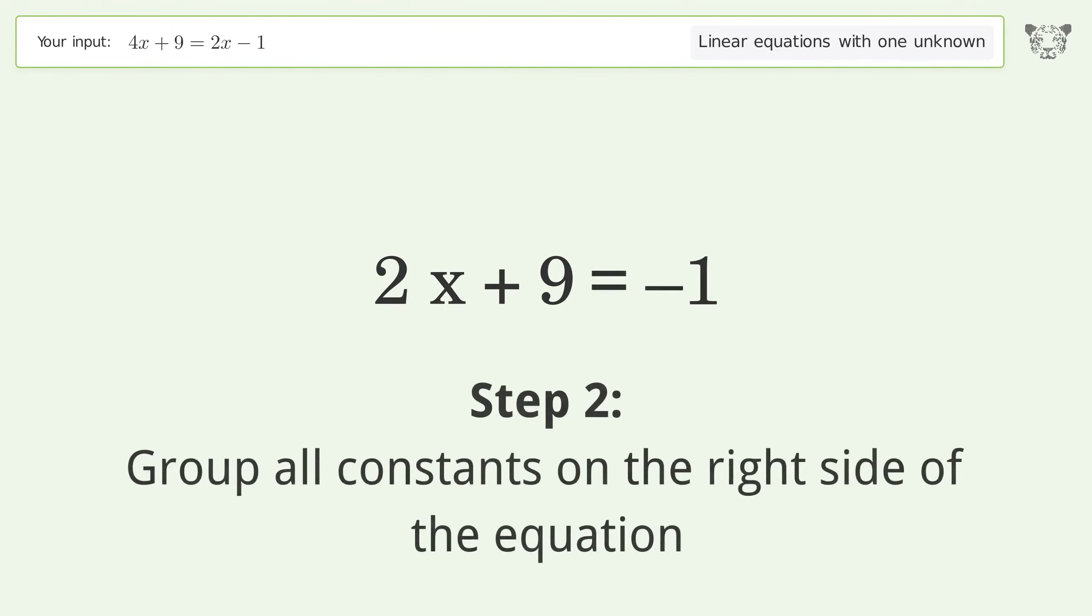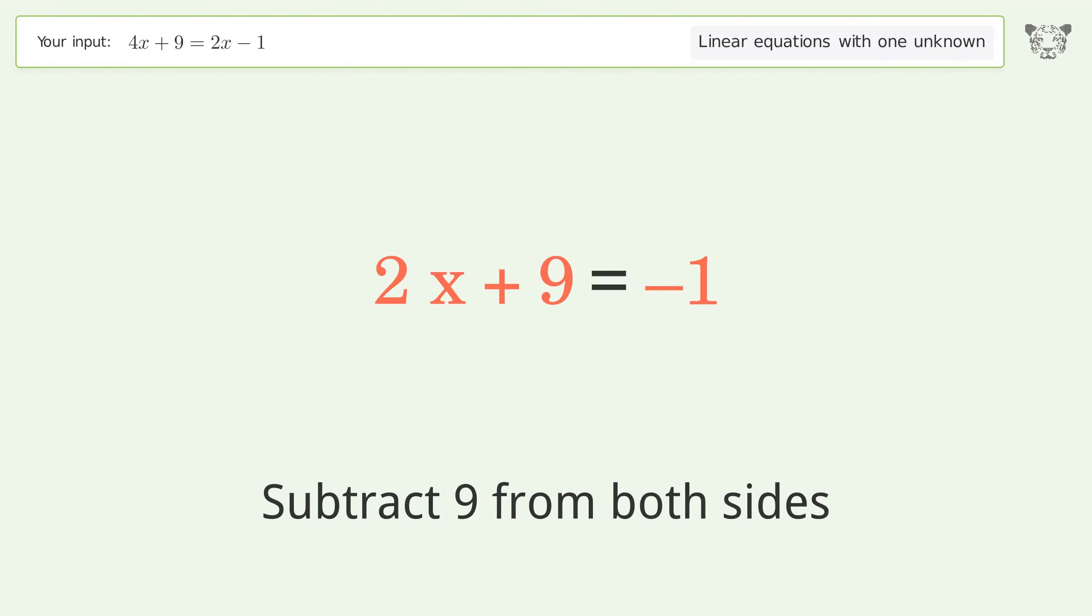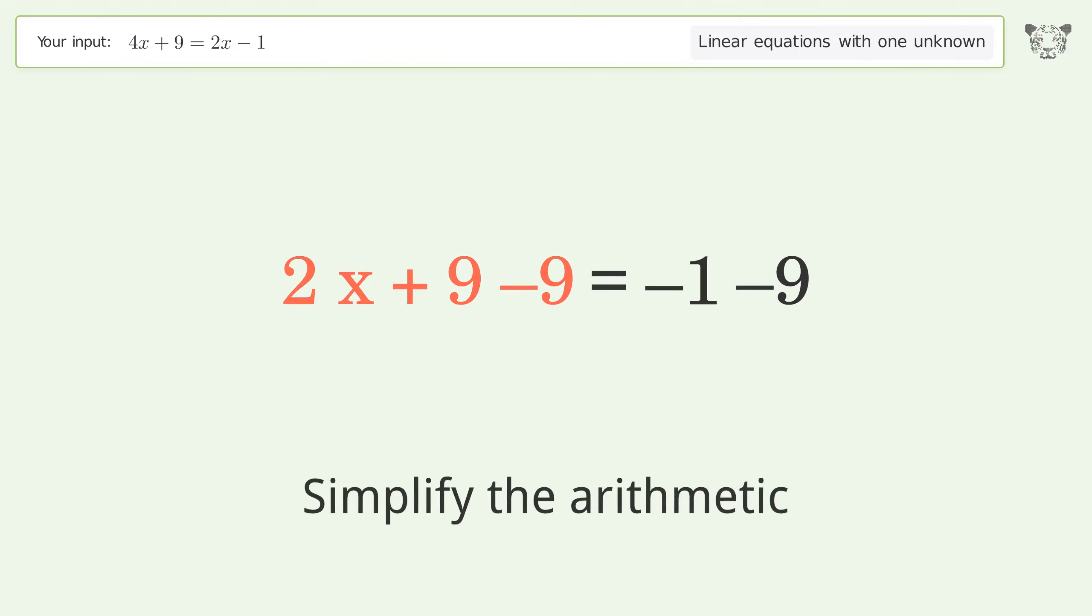Group all constants on the right side of the equation. Subtract 9 from both sides. Simplify the arithmetic.